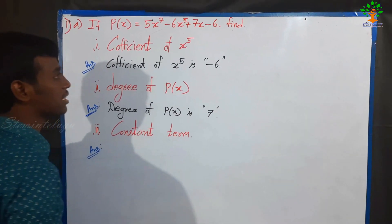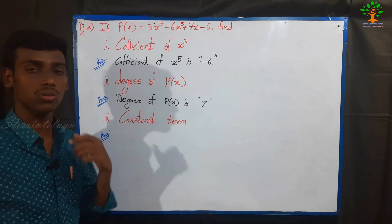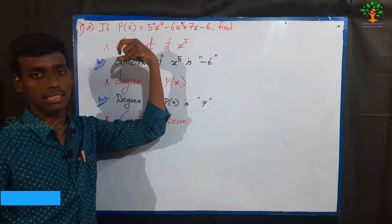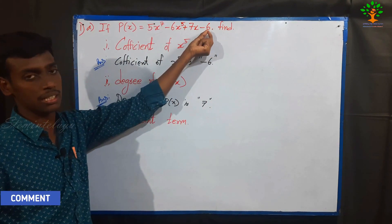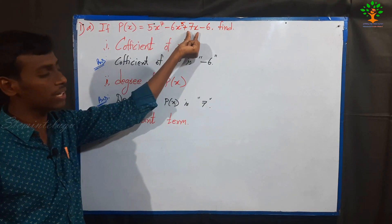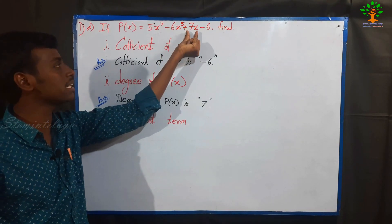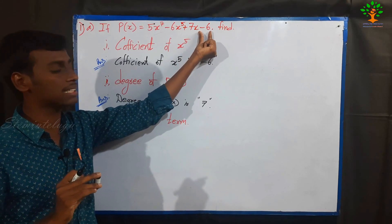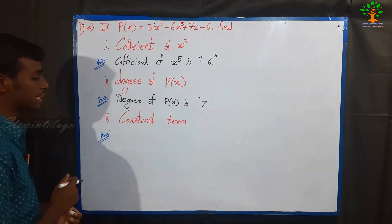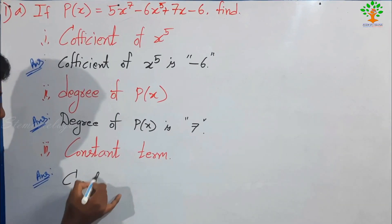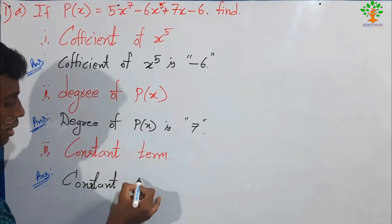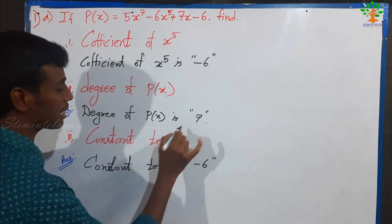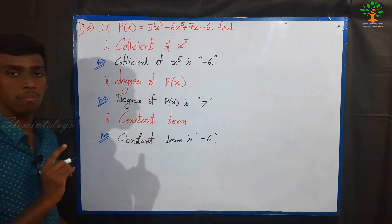What does the coefficient of x power 5 represent? The coefficient represents variables. The constant term does not have any variables — x power 9 to x power 7 has variables, but a constant does not. So the constant term is minus 6.